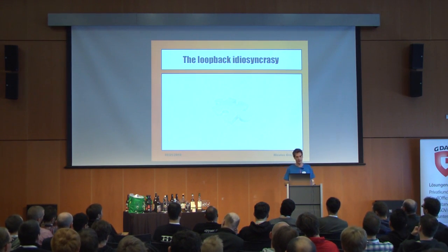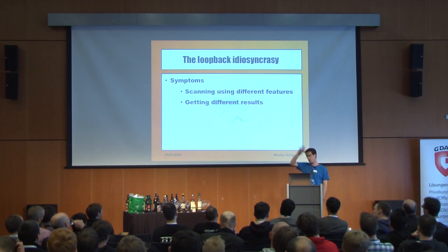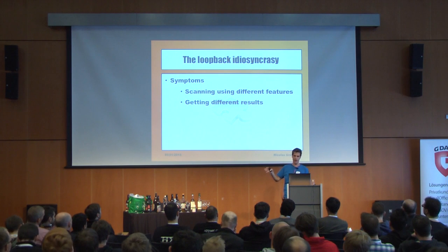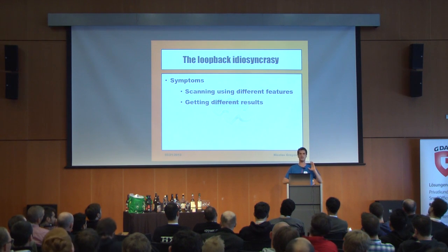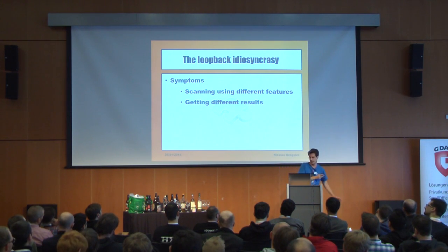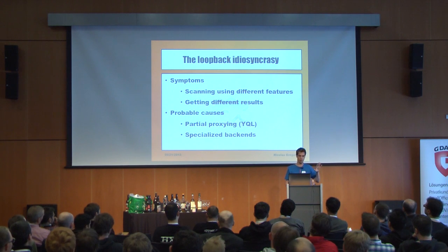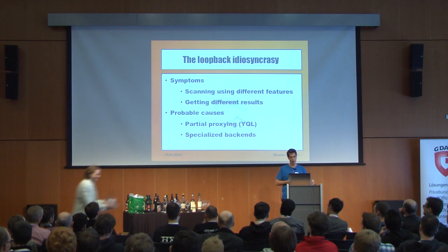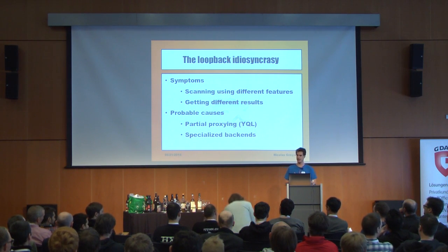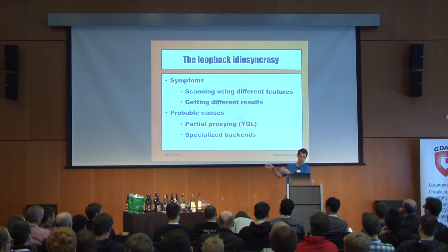The loopback idiosyncrasy: if you're scanning one large application with several SSRF vectors and you get different results — via one feature port 22 is open, via another it's not — most of the time it's because you have partial proxying, where only part of the features go through proxies and others go directly to the internet. Or you may have a specialized backend: depending on what you ask for, you may be routed to farm A or farm B. We are mostly in blind mode, so we really have to deduce things from small pieces of information.